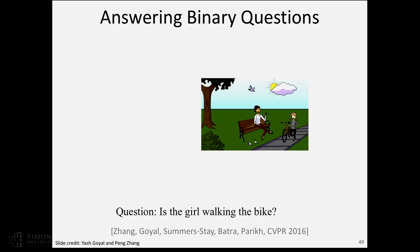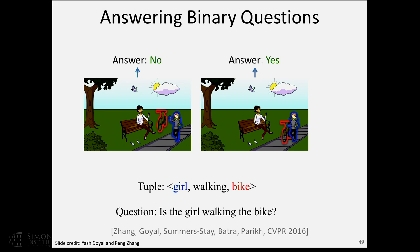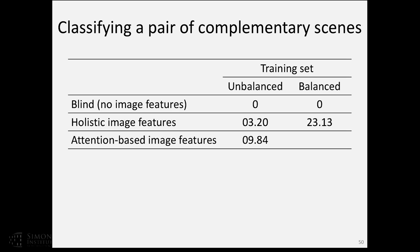If you use a more sophisticated model — where instead of looking at the whole image, it parses the question to find the primary object, secondary object, and relation, then explicitly aligns these to the image — you get bigger improvements. This attention-based model decides where to look based on the question and then answers it. In the unbalanced case, it gives some improvement; in the balanced case, where the model has been trained on balanced data and can actually learn visual concepts, you see a bigger improvement in performance.